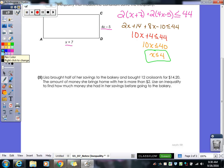Okay. Lisa brought half of her savings to the bakery and bought 12 croissants for $14.20. The amount of money she brings home with her is more than $2. Use an inequality to find out how much money she had in her savings account before going to the bakery. All right, so what should our X be? Amount of money in savings. That's what we were told to find. To find how much money she had in her savings account.